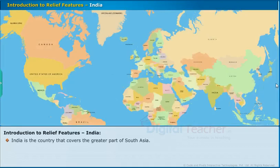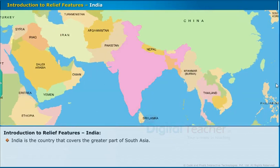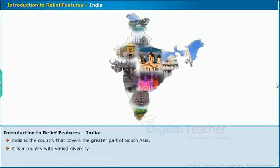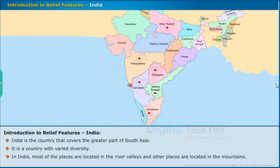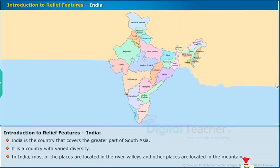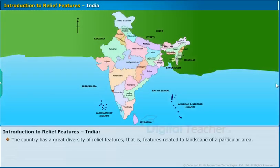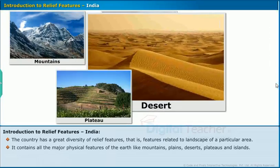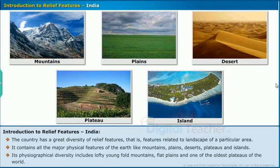India is a country that covers the greater part of South Asia. It is a country with varied diversity. In India, most places are located in the river valleys and other places are located in the mountains. The country has great diversity of relief features — features related to the landscape of a particular area. It contains all the major physical features of the earth like mountains, plains, deserts, plateaus, and islands. Its physiographical diversity includes lofty engfold mountains, flat plains, and one of the oldest plateaus of the world.